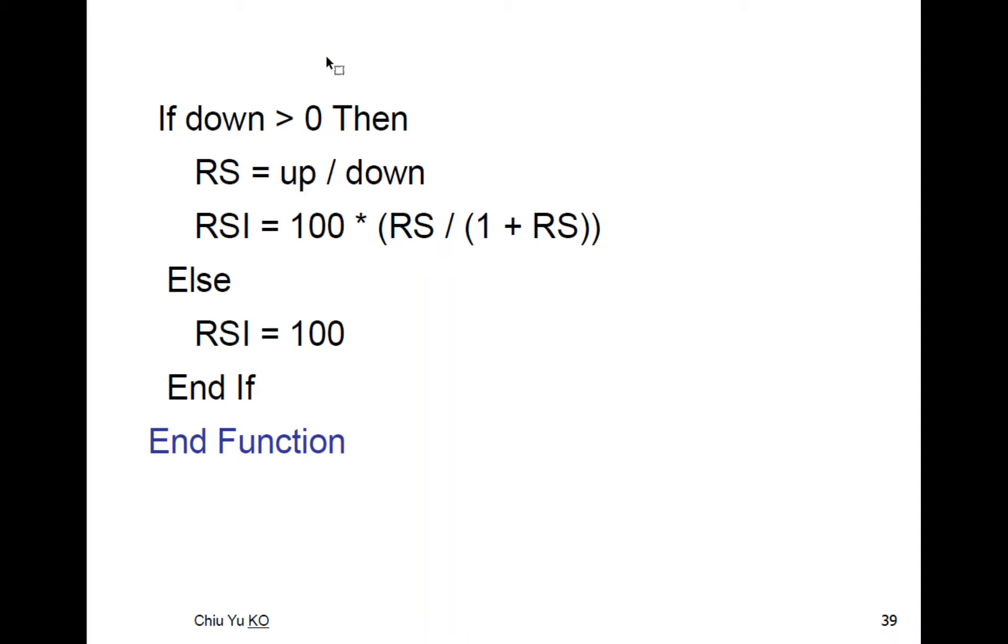Then if Down is more than zero, then you divide Up over Down and use this formula. Otherwise you get 100. So this is to make sure that when Down is zero, RSI is defined as 100. So this is to take care of the special case. Do note that a lot of programming actually spends more time handling special cases than the normal case.